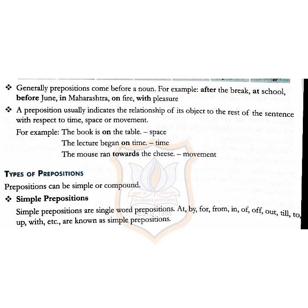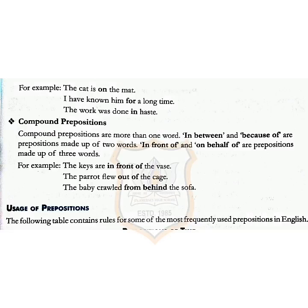Now we move on to types of preposition. Prepositions can be simple or compound. Simple prepositions are single word prepositions, for example: at, by, for, from, in, off, out, till, to, up, with, etc. For example: 'The cat is on the mat.' 'I have known him for a long time.' 'The work was done in haste.'